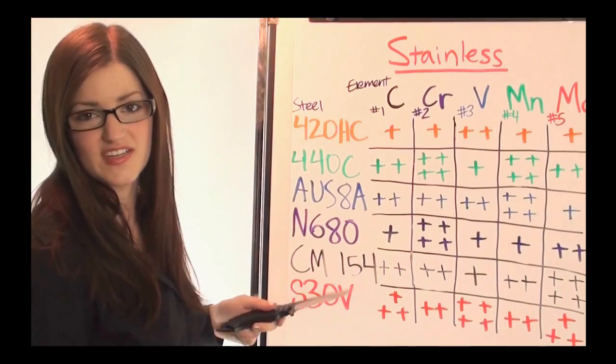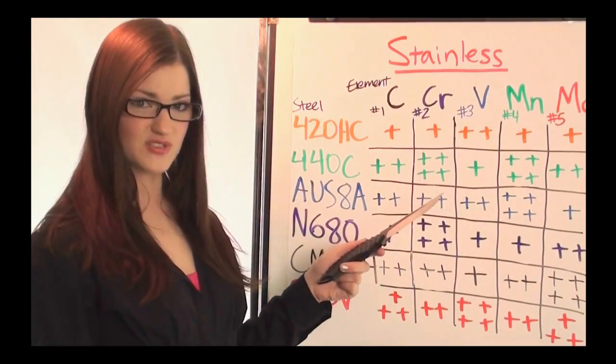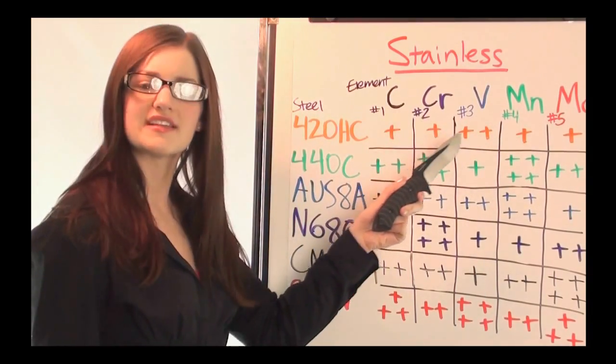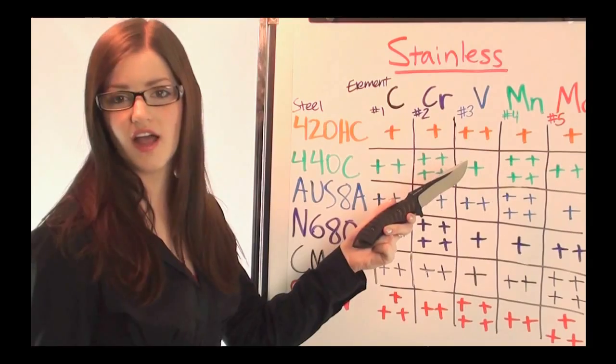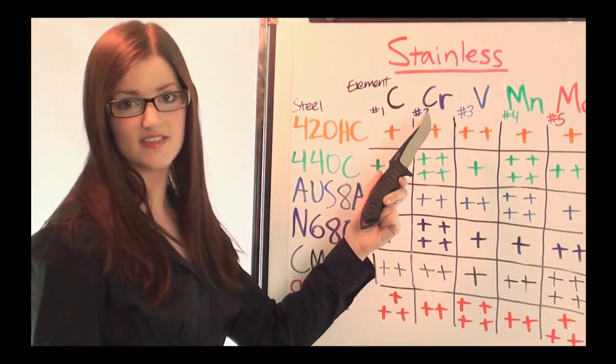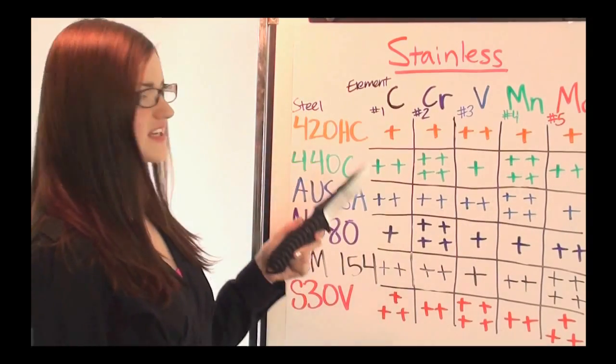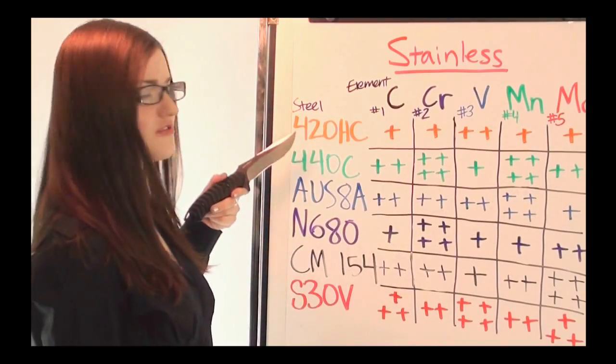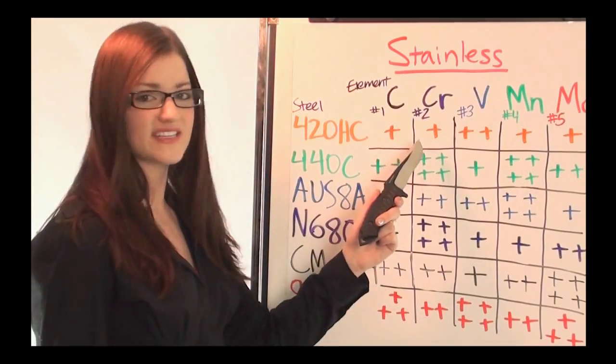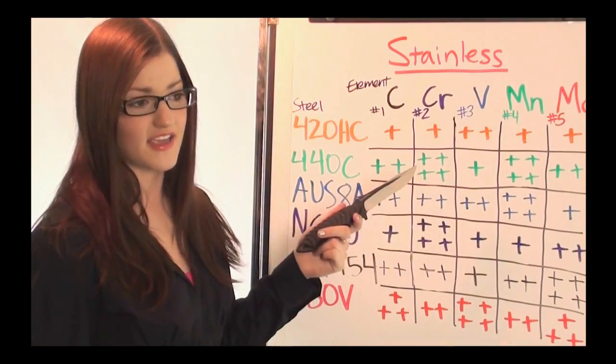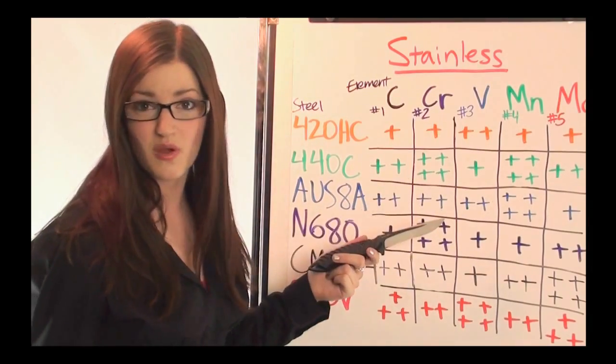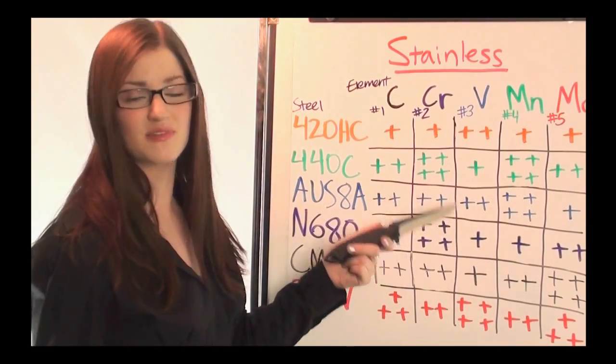I only picked six different steels for comparison, and the way I'm going to do it is the ones with fewer pluses means they have a lower content of whatever the element is, and the ones with more pluses means they have more of that content. So to compare, 420HC you can see doesn't have very many pluses. It doesn't perform as well as some of the other ones with more pluses, but it's also cheaper.